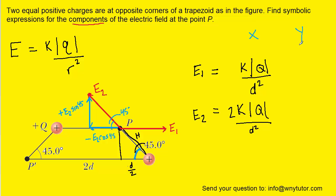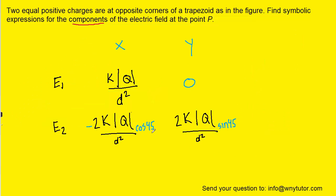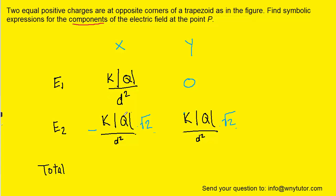Arranging the fields by components: E1 points only in the x direction, so its y component is 0. For E2, the x component is −E2·cos(45°) and the y component is E2·sin(45°). Since both cos(45°) and sin(45°) equal √2/2, the 2 in the numerator cancels with the 2 in the denominator. Adding the two y components gives 0 + √2·kQ/D², which is the total y component. We can drop the absolute value since Q is positive.